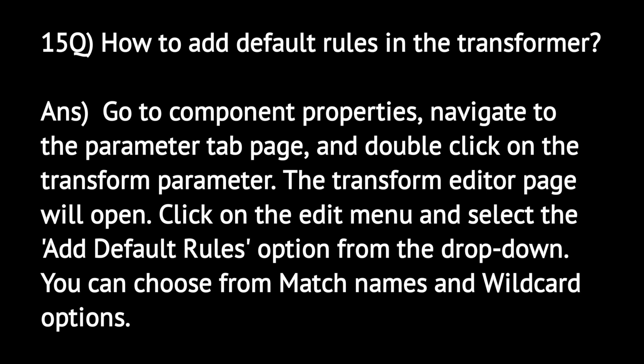How to add default rules in the transformer? Go to component properties, navigate to the parameter tab page, and double-click on the transform parameter — the transform editor page will open. Click on the edit menu and select the 'add default rules' option from the drop-down. You can choose from match names and wildcard options.